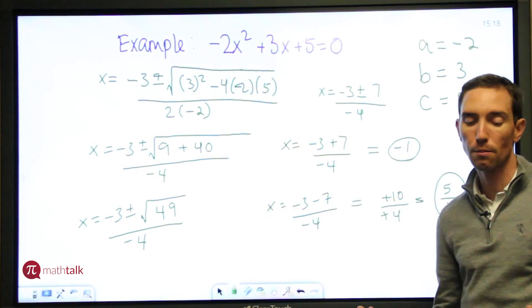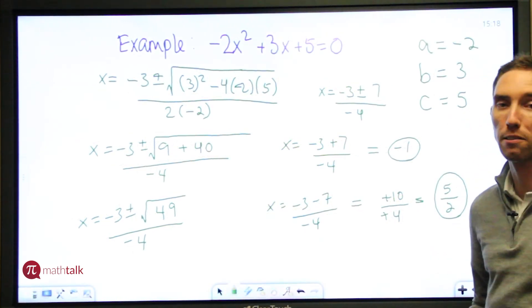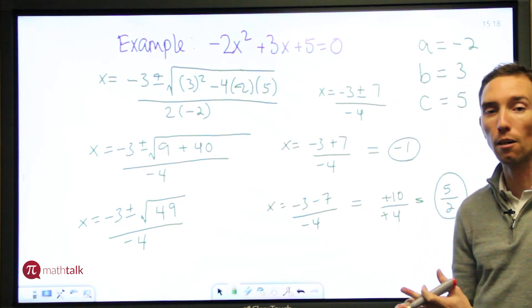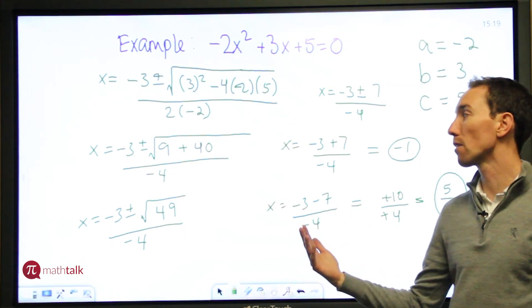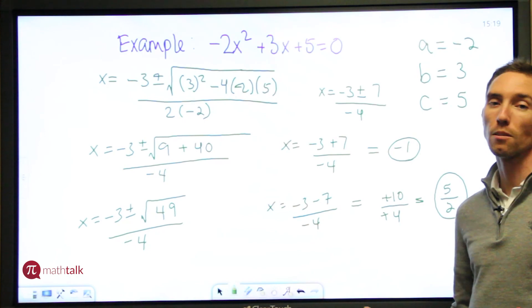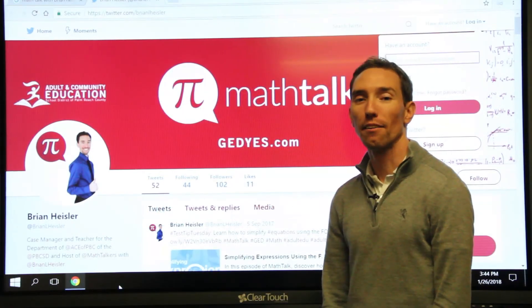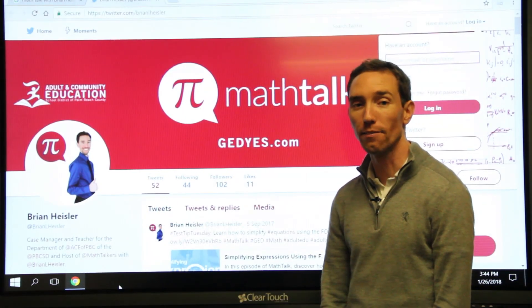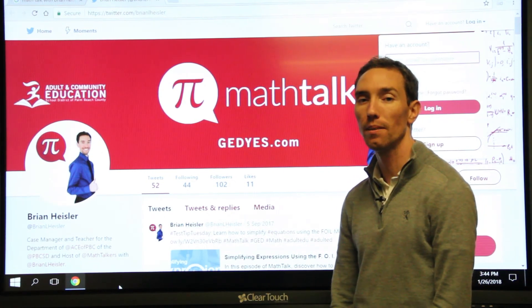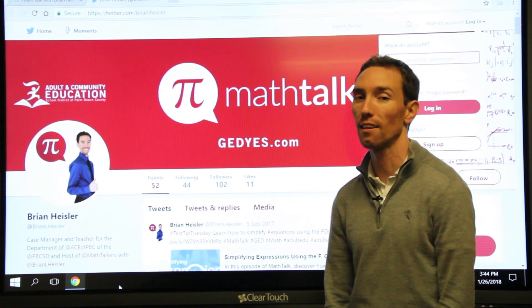So when you get to these types of equations, I hope that you'll use the quadratic formula. Again, it's found on your formula sheet. You want to figure out what's a, what's b, and what's c. Plug them into your formula and start simplifying down to your two solutions. I hope this helps. Thanks. If you have any other questions or you need assistance and you live in the Palm Beach County area, visit our website at geds.com to find a location near you and sign up for classes.